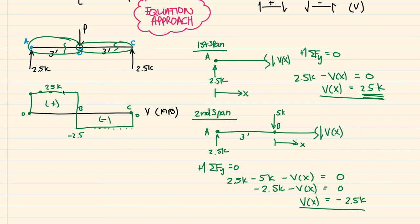Welcome back. In the last video, we were looking at the shear diagram and coming up with equations that represented the shear between A and B, and B and C. Those equations gave us what our shear diagram should look like — it represented our shear diagram in equation form. In this video, we're going to do the same approach, except now we're going to look at the moment diagram, using the equation approach to figure out what equations represent the moment between A and B, and B and C.